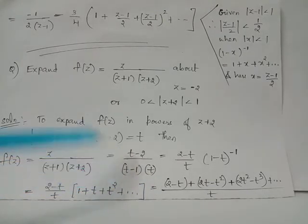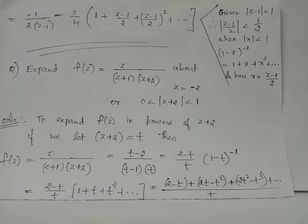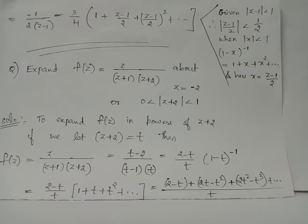Multiplying numerator and denominator by negative 1, t minus 2 becomes 2 minus t and t minus 1 becomes 1 minus t. Taking 1 minus t to the numerator gives (1 minus t) raised to minus 1, since 1 over (1 minus t) equals (1 minus t) to the power minus 1. Thus f of t equals (2 minus t) over t, times (1 minus t) to the power minus 1.